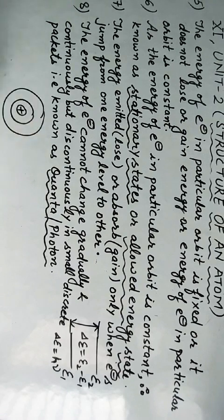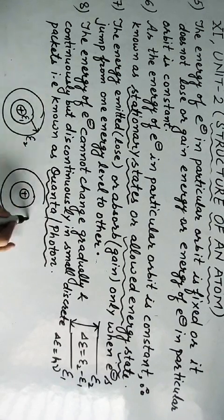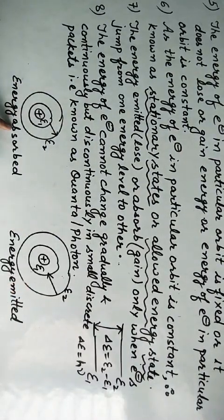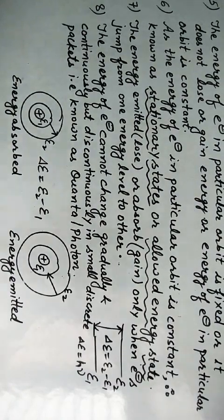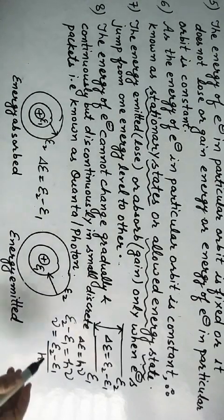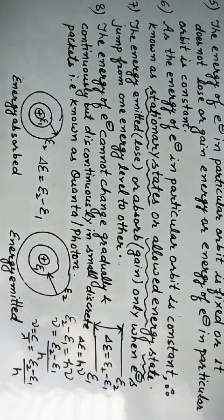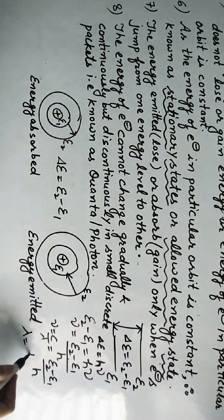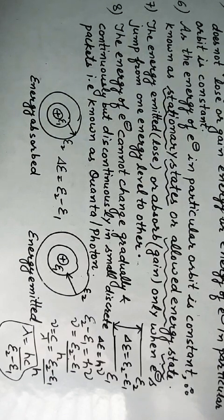Diagrammatically, consider the nucleus, the first shell, and the second shell. If an electron moves from E1 to E2, it absorbs energy; if it returns from E2 to E1, it emits energy. In both cases, the energy absorbed or emitted equals delta E = E2 minus E1 = hν. Since ν = c/λ, we get: c/λ = (E2 − E1)/h, and therefore λ = hc/(E2 − E1). Using this formula, we are able to find out the wavelengths that correspond to the different lines in the spectrum of the atom.